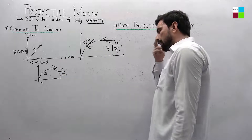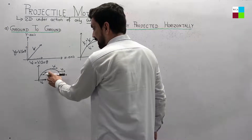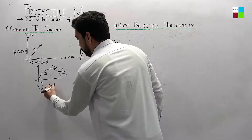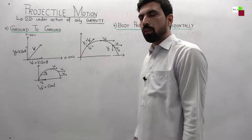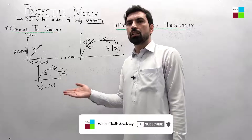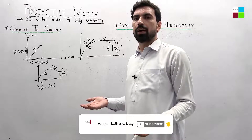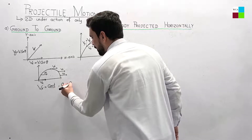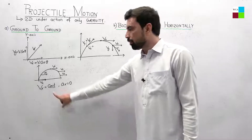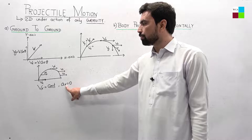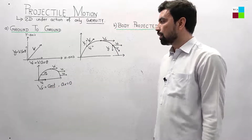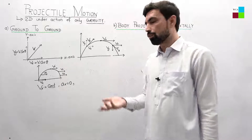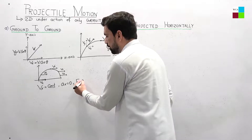Throughout the motion of the projectile, you can clearly see that vx is not changing its direction — it means vx is constant. When velocity is constant, what will be the acceleration? Because acceleration is defined as the change of velocity with respect to time, if velocity is constant, the ax component will be zero. So the horizontal component of acceleration is zero, horizontal velocity is constant, horizontal acceleration is zero. According to Newton's first law, when acceleration is zero, force is also zero — so Fx will also be equal to zero.